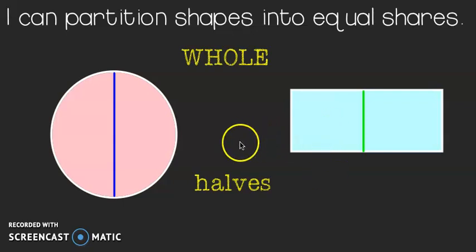How many halves make a whole? Two halves always make a whole. One half plus one half equals my whole one. Let's try some more.